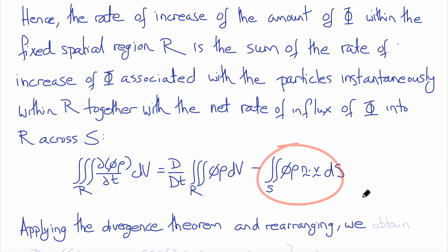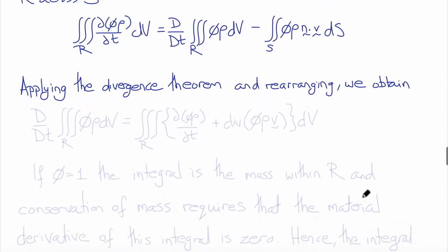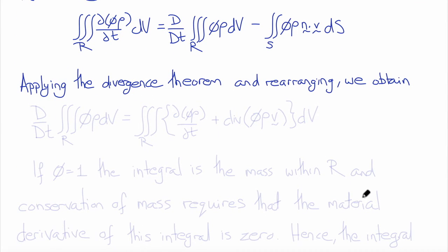Applying then the divergence theorem and rearranging this expression, you'll obtain that the material time derivative of the volume integral over R of phi times rho with respect to V, is equal to the volume integral over R of the derivative del phi rho del t, plus the divergence of phi by rho by V, integrated over the volume.